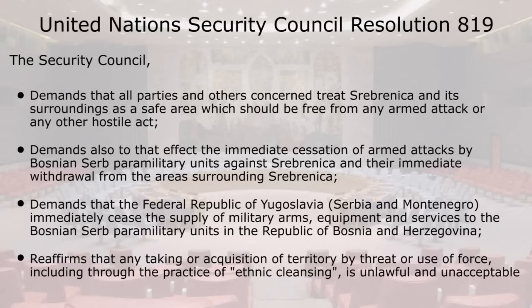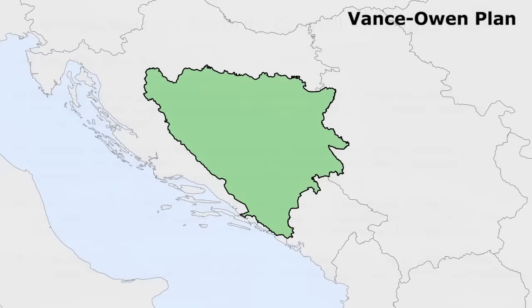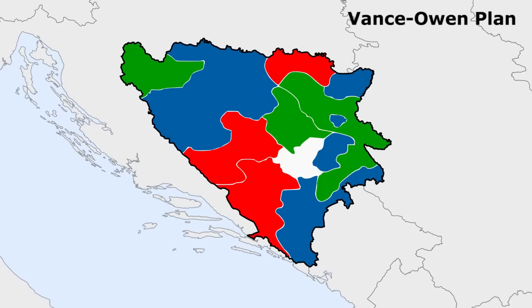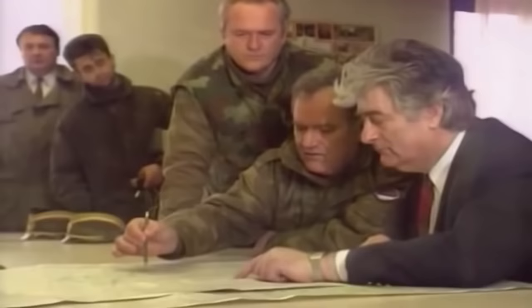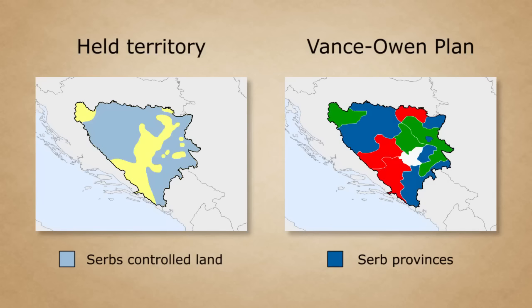The international community devised a plan — the Vance-Owen plan — which would divide the country into 10 ethnic provinces: three Bosniak, three Serb, three Croat, as well as the neutral capital, Sarajevo. The Bosnian president, the Croatian president, and the Bosnian Croats had all agreed to the plan. The Serbian president urged the Bosnian Serbs to agree as well, but through their military conquests, they had already taken control of about two-thirds of Bosnia and Herzegovina. Accepting the Vance-Owen plan would mean giving up about 25% of their currently held territory, so the plan ultimately broke down.